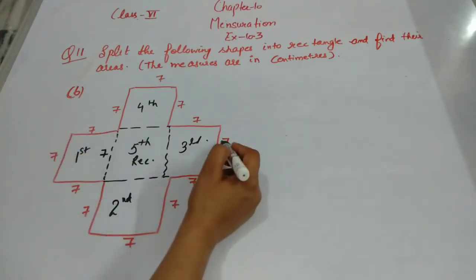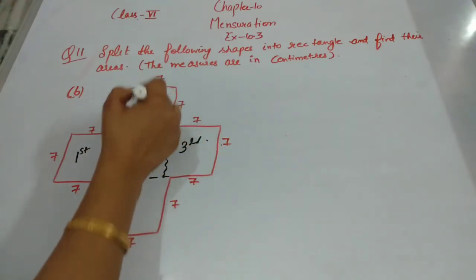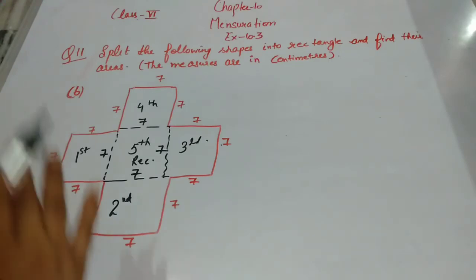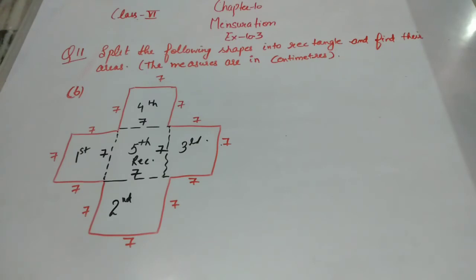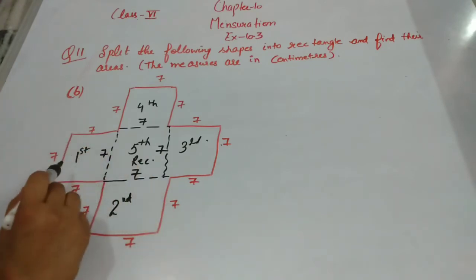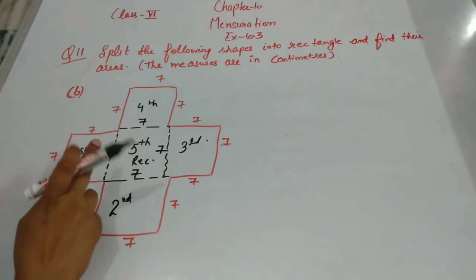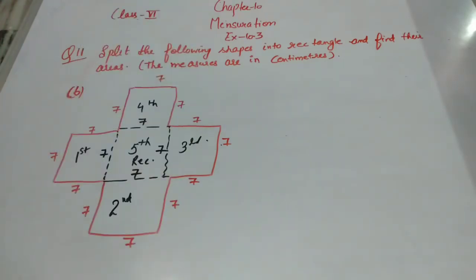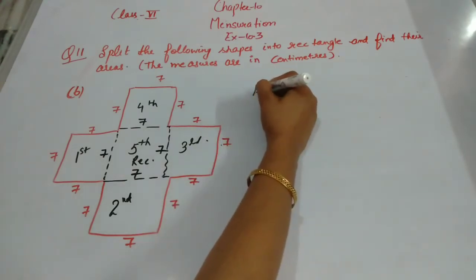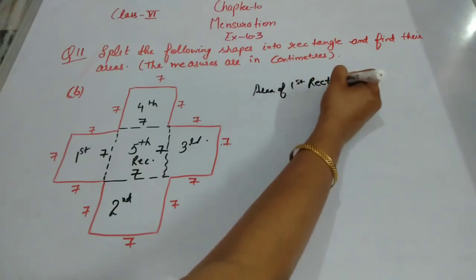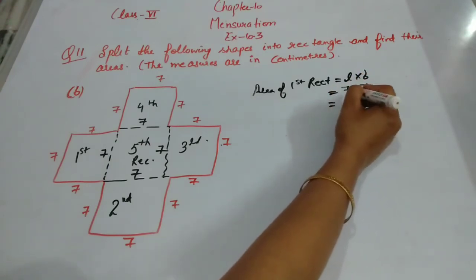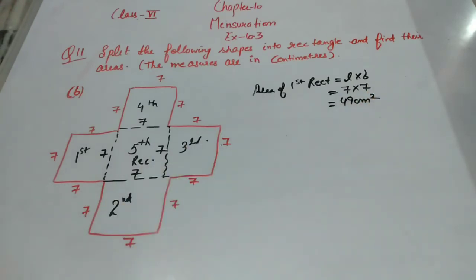Each shape here is a square with side 7, so there are five squares. You can find the area of one square and multiply by 5, or find each separately. Area of each square or rectangle equals length into breadth, which is 7 into 7 equals 49 centimeter square.